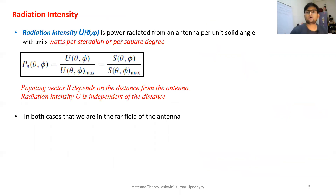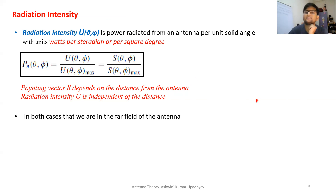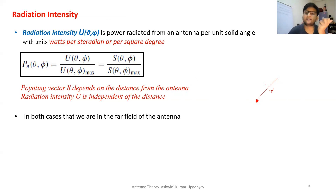Coming back to our main topics — the first is radiation intensity. Till now, we have been talking about power density in terms of power per unit area. Suppose if you have an antenna placed at a point and it is radiating power in all directions; at a particular distance r, if you want to calculate the radiated power density, you scan all the area around this antenna at distance r, which essentially makes a spherical surface.